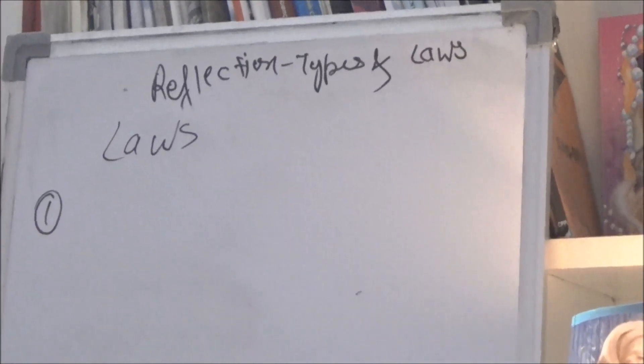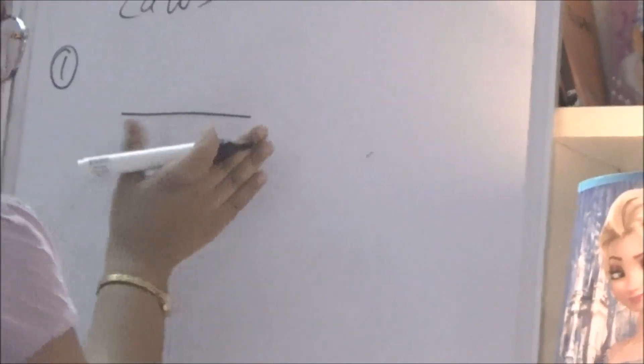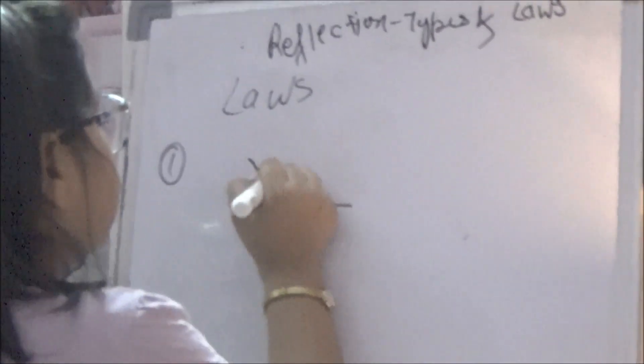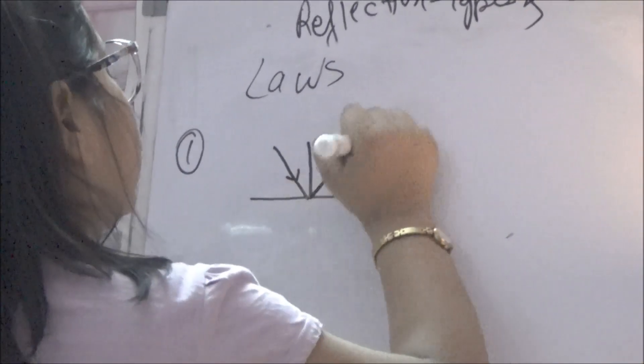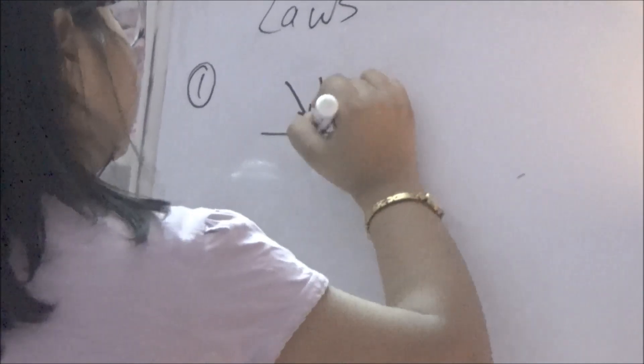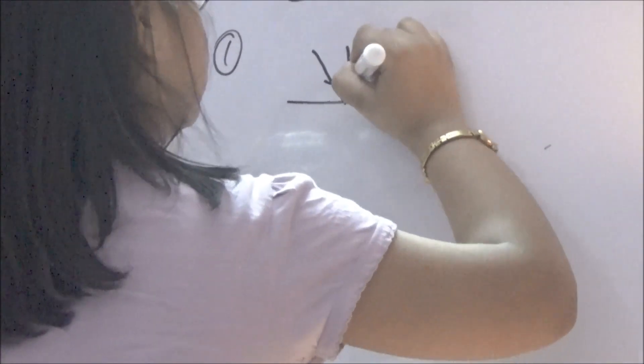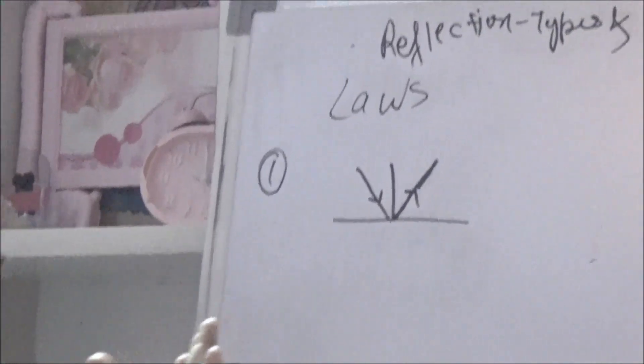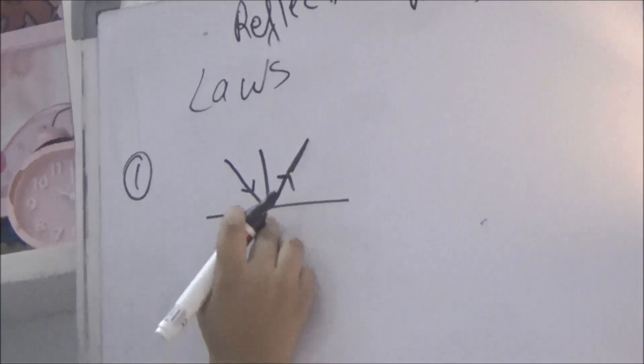First law: the incident ray, reflected ray, and the normal all lie on the same plane. The incident ray is the ray falling onto the mirror. The reflected ray is the ray which bounces back from the mirror. The normal is the line perpendicular to the mirror surface. So on the mirror surface, the incident ray comes in, the reflected ray goes out, and both lie on the same plane as the normal.